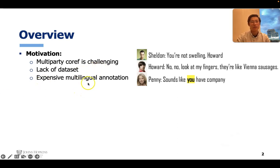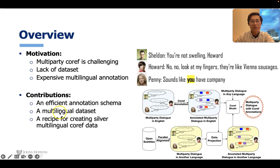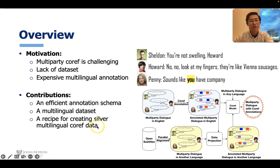And if you want to do this in a multilingual setting, it's even harder due to the super expensive annotation. However, here comes our work. We propose an efficient annotation schema to allow better and faster annotation, and we build a coreference multilingual dataset based on that. We also propose a recipe for creating silver multilingual coreference data, and our experiments show this recipe can be a good solution to build a coreference model in many languages without extra annotation.